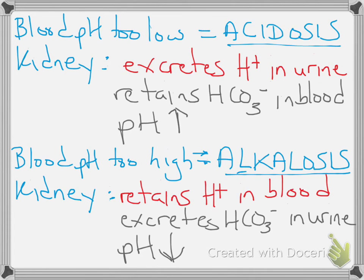If the blood pH is too high, that's a condition called alkalosis, which can result from a number of different conditions. The kidney can again help compensate — this time by retaining hydrogen ions in the blood, since more hydrogen brings the pH down, and by excreting the bicarbonate ion in the urine. That way we get rid of the thing that would bring the pH up, and retain the hydrogen that brings the pH back down to where it needs to be.